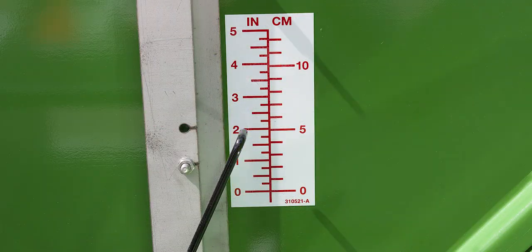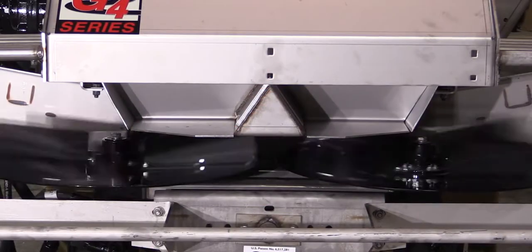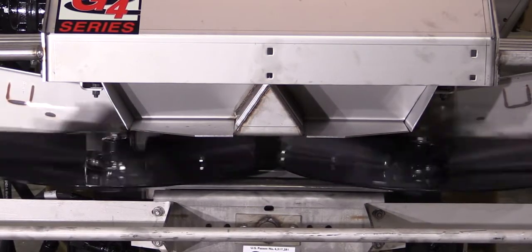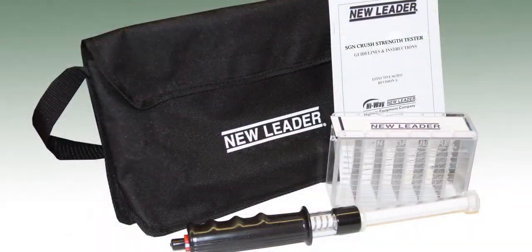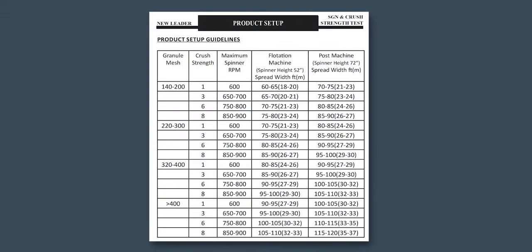Be sure to pre-charge the conveyor prior to the spread pattern test. Proper spinner speed is very important to obtaining accurate spread patterns. The initial spinner speed setting will be determined based on the results of the material SGN — size, grade, and number — and crush strength test. The SGN, crush strength, and spread pattern test kits are now supplied with most new New Leader crop nutrient applicators.